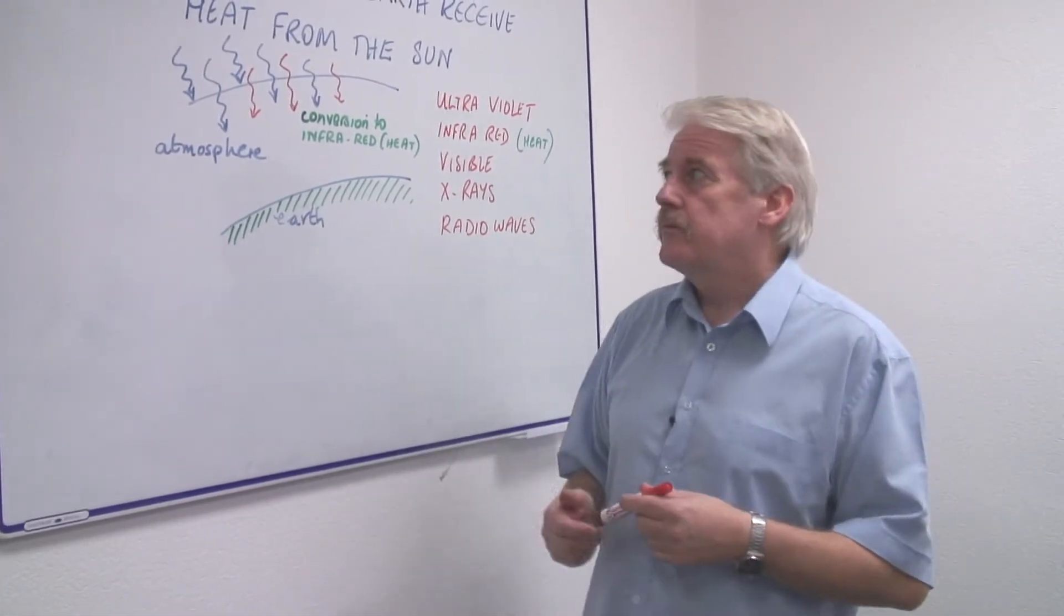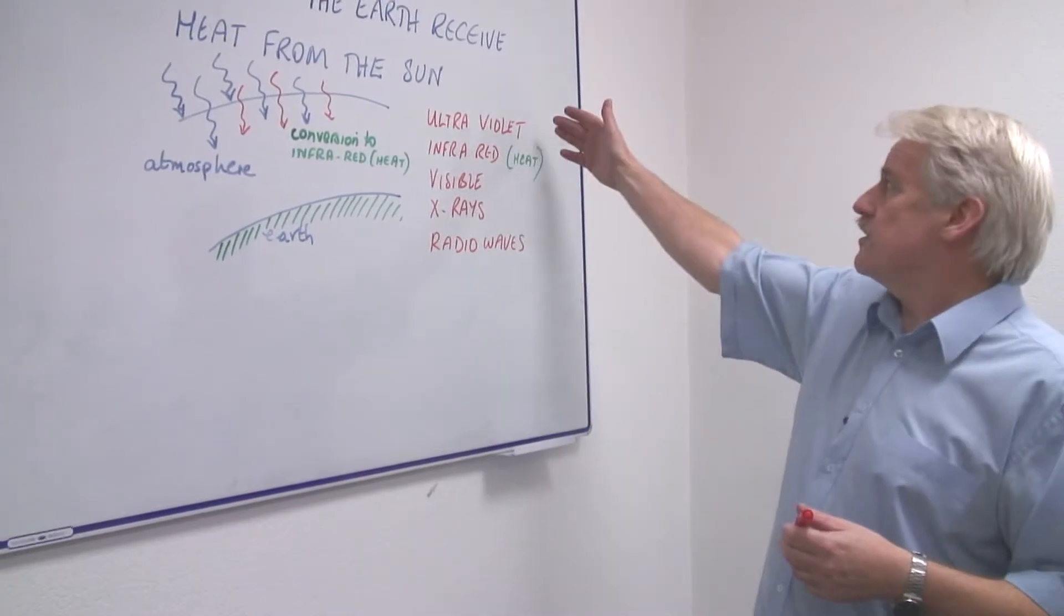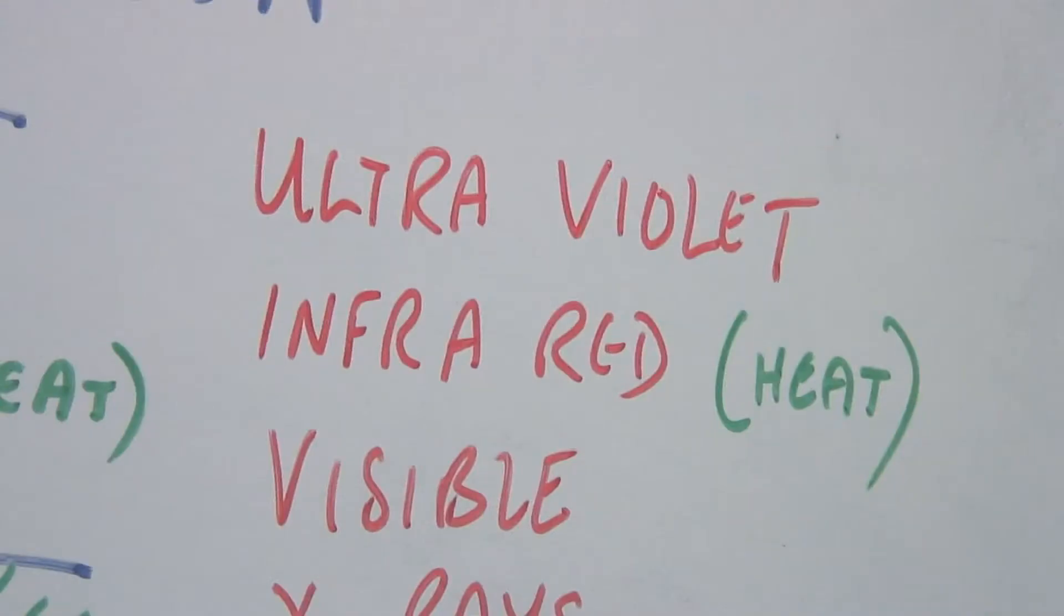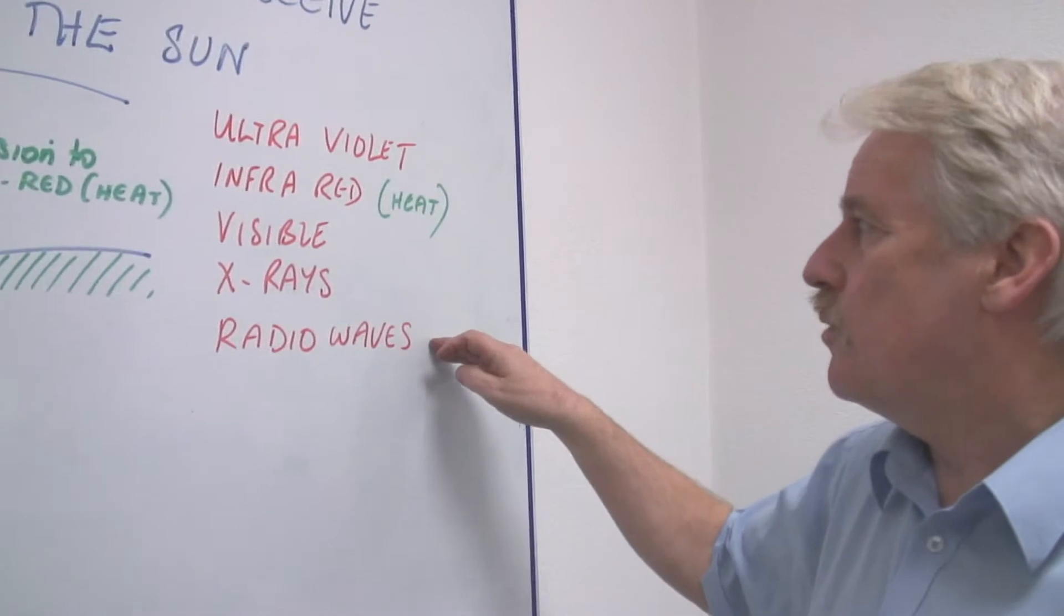All you can get is radiation. And coming from the sun are various kinds of radiation: ultraviolet, infrared, visible, x-rays, radio waves.